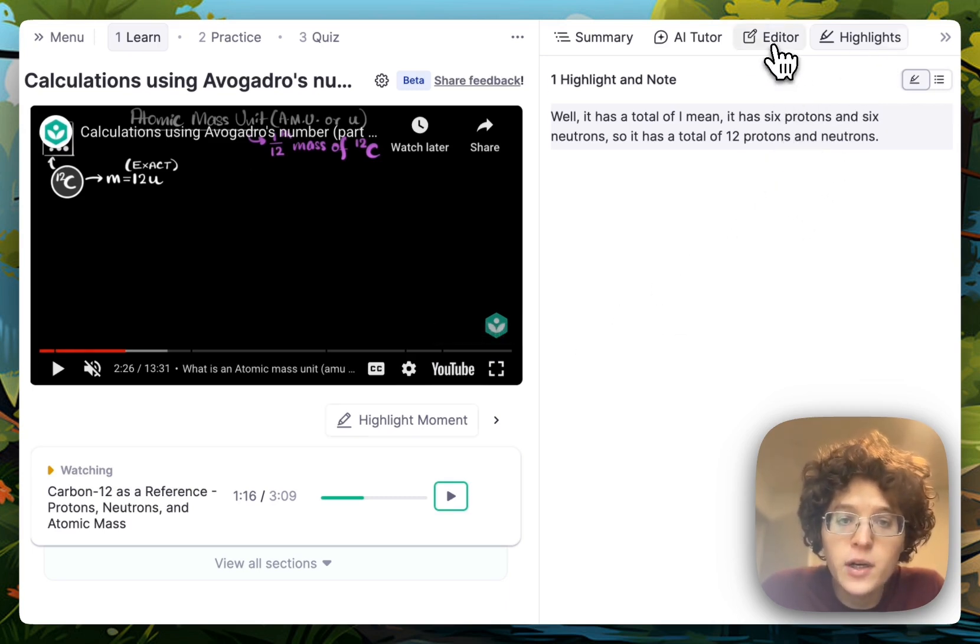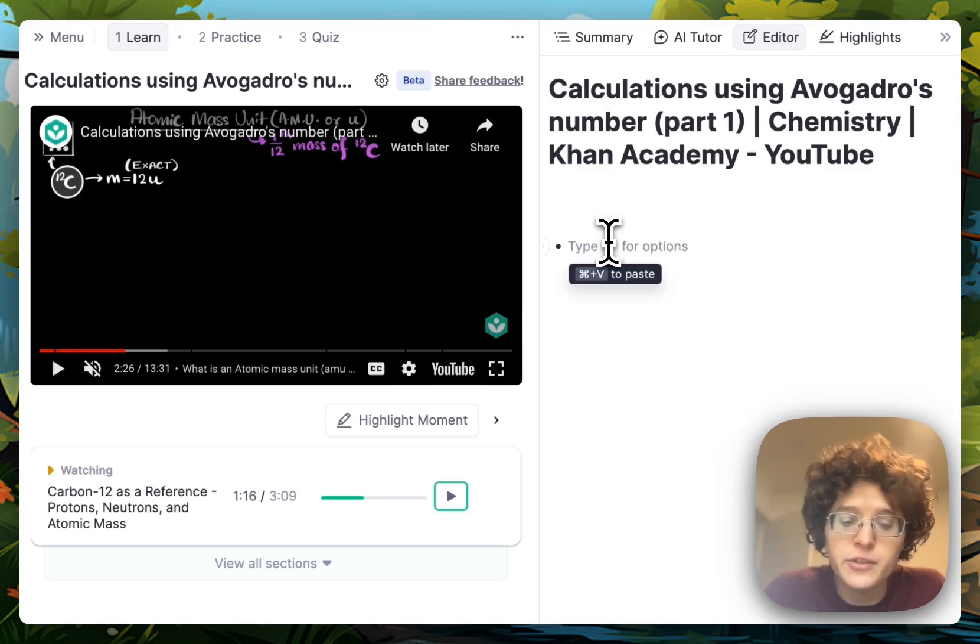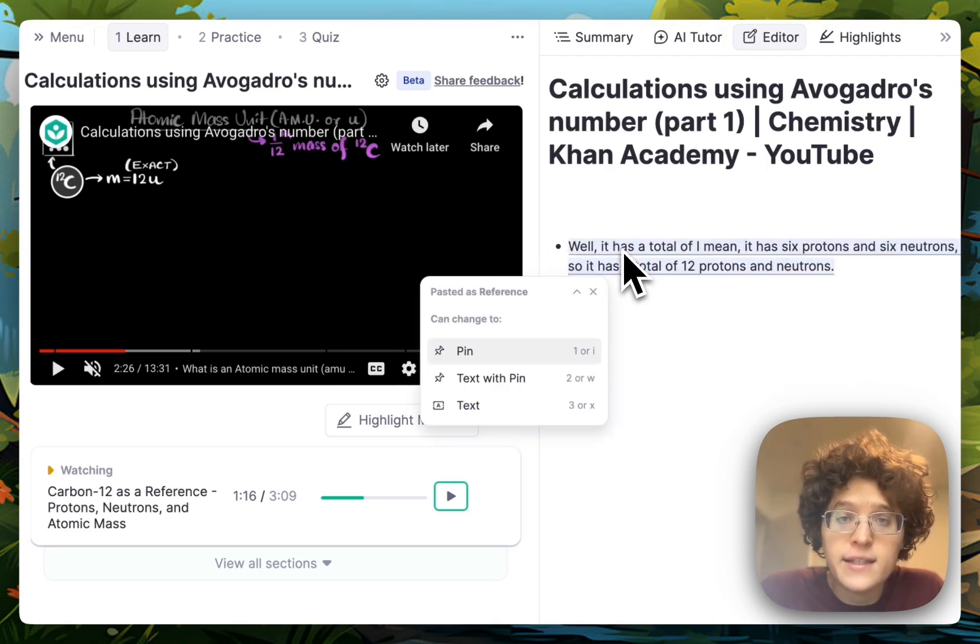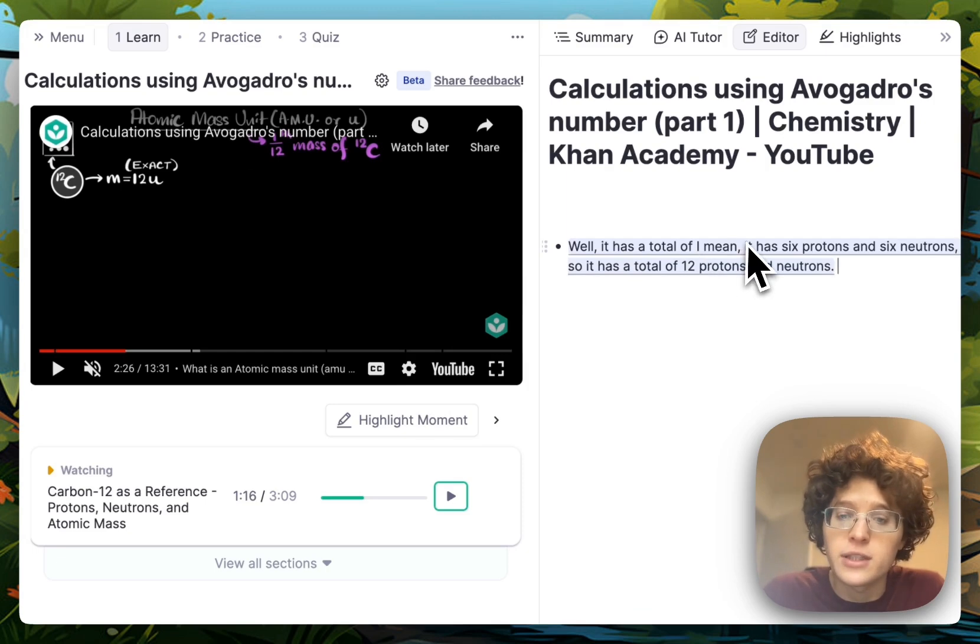You can either just leave the highlight here, or you can go to the editor and start writing your own notes. You can paste in your highlight by pressing Command-V on your keyboard and then write your own notes around it. For example, you can put this on the back or front of a flashcard.